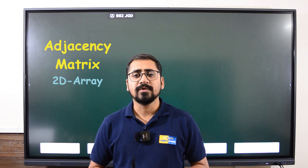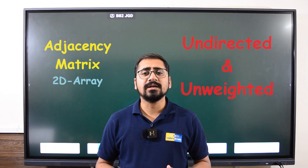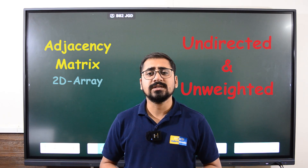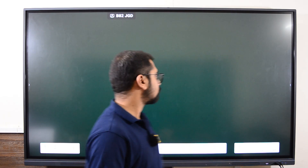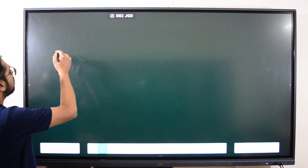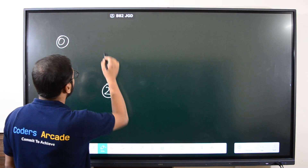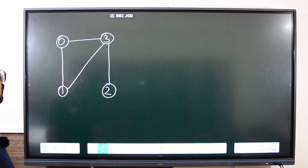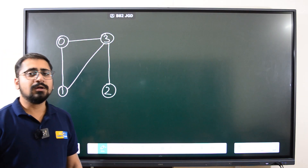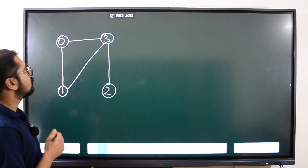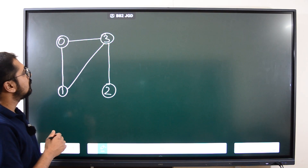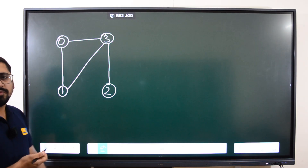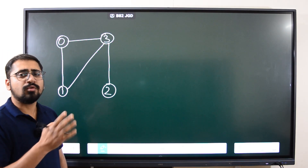Today I am going to discuss only the adjacency matrix approach and how it actually works. Let's take a simple undirected and unweighted graph and see how we do the implementation using a 2D array. Suppose we have a graph with nodes zero, one, two, and three, with edges connecting them. We need to make a 2D array, and since we have four nodes, we make a matrix of four cross four size.